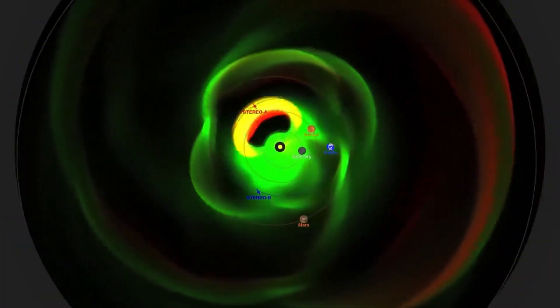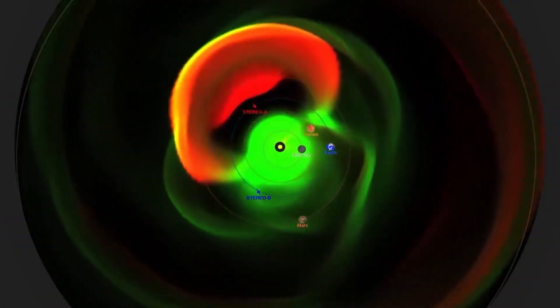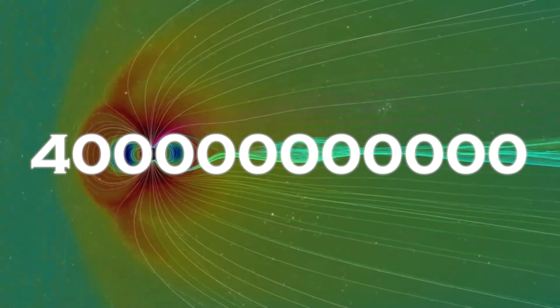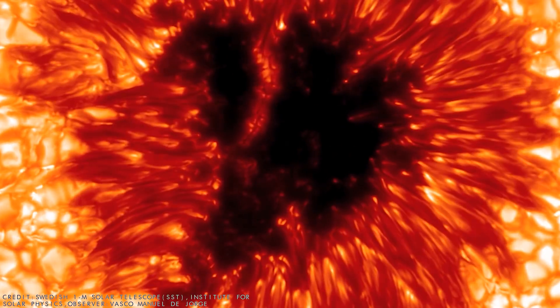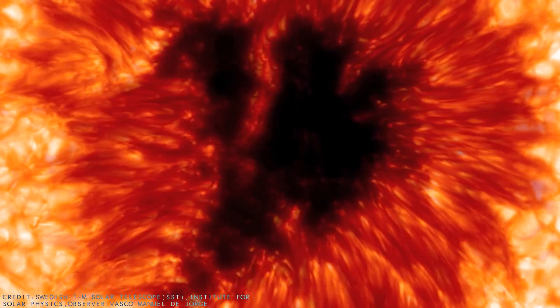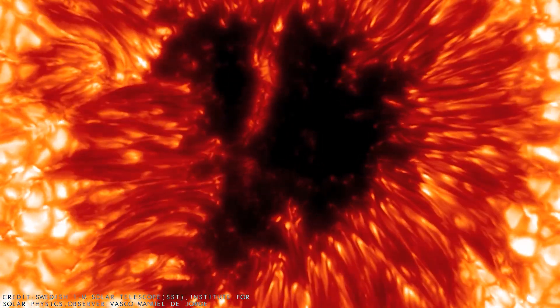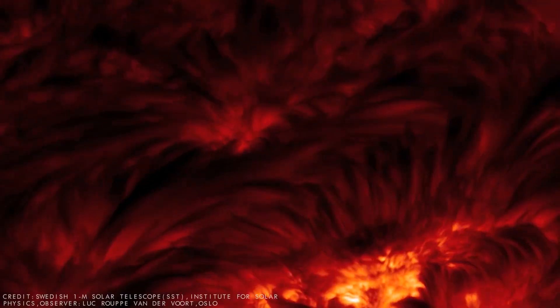Betelgeuse's corona surprised scientists by ejecting an amount of mass 400 billion times greater than the average corona mass ejection. This cloud of hot gas released by the star temporarily covered some of its light, leading to the unusual dimming observed.